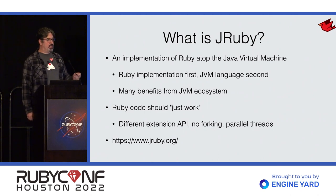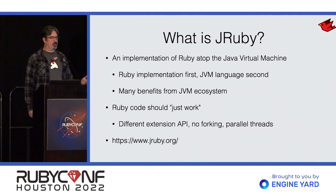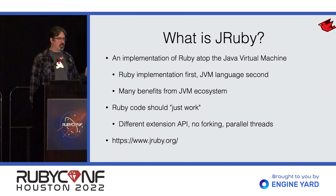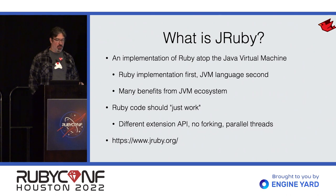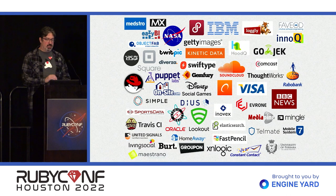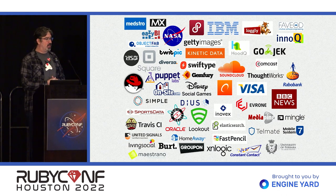The general idea is that Ruby code should just work. You should be able to take any pure Ruby application — and many extensions that have JRuby versions — plug your application into JRuby and it should run out of the box. We don't have the C extension API that CRuby does; we have our own. Some libraries need to be ported. We don't support forking because the JVM doesn't, and unlike CRuby, our threads actually run in parallel.